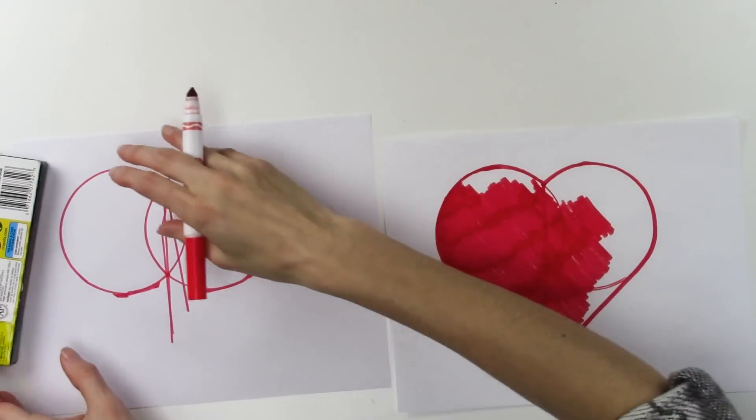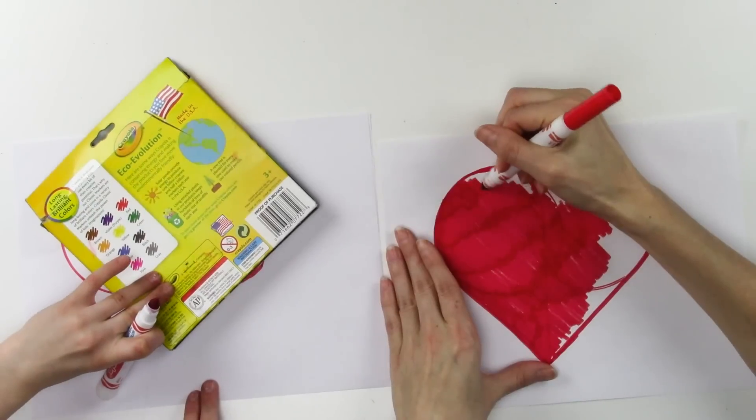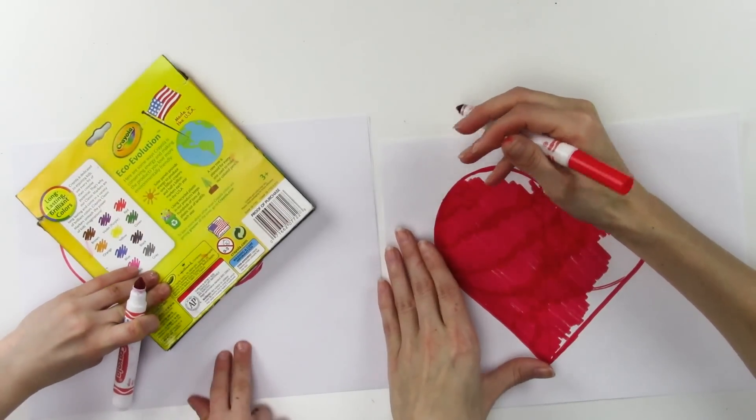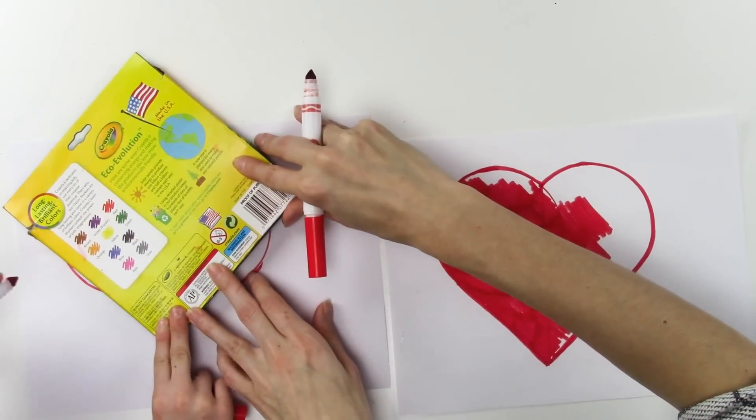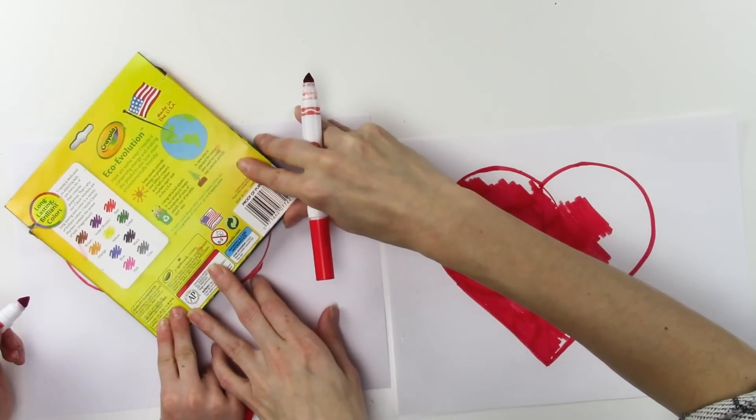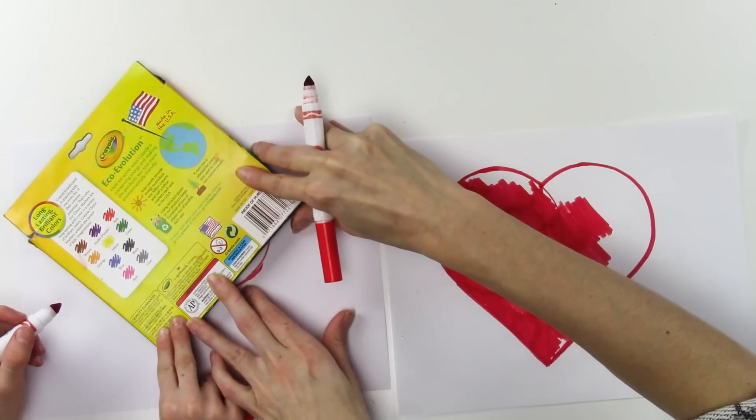Yep. Then do you remember what to do next? Yep, so you want to make that edge go there and then you kind of twist it around until you have just a little bit of the sides.